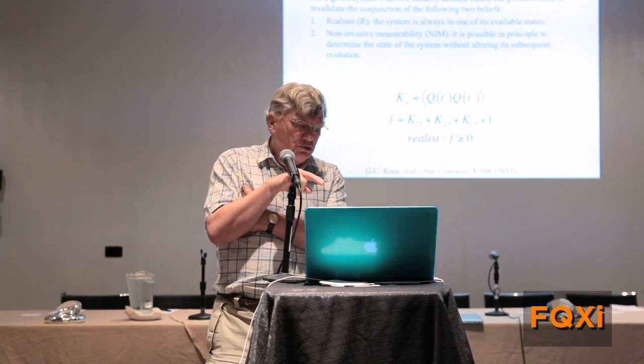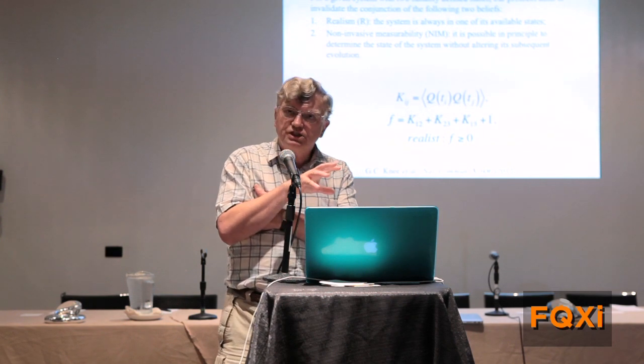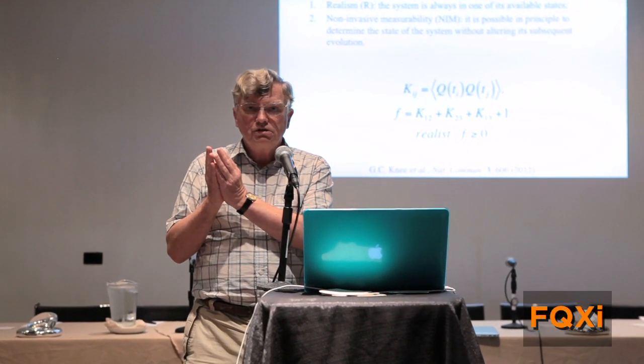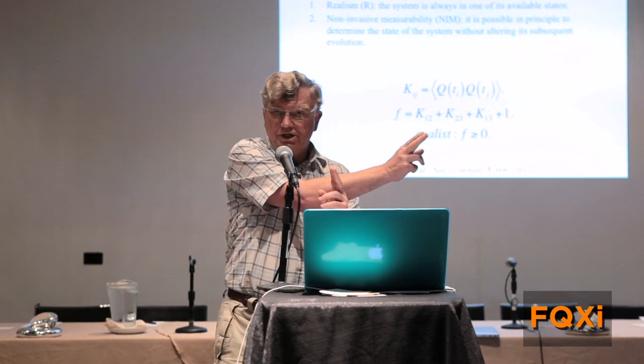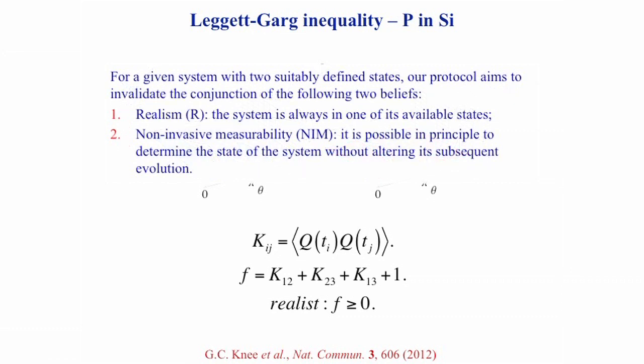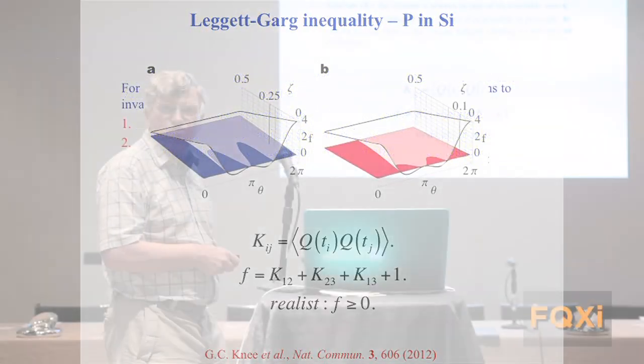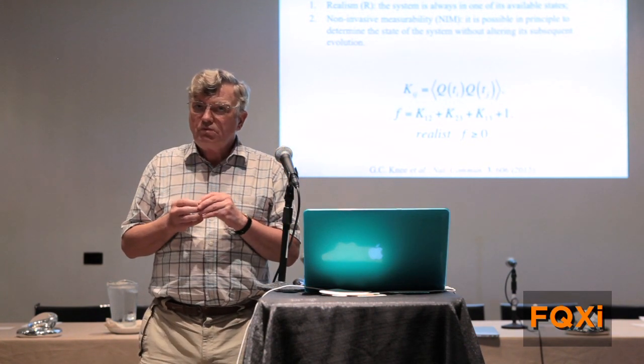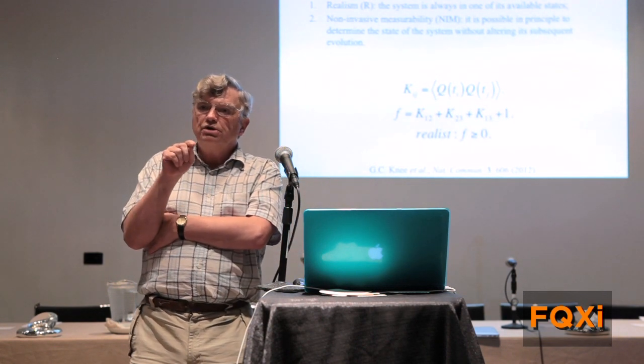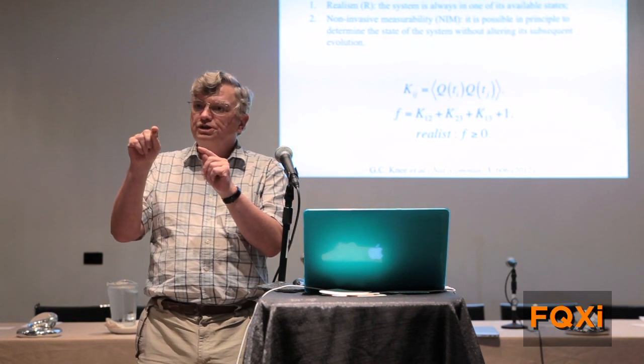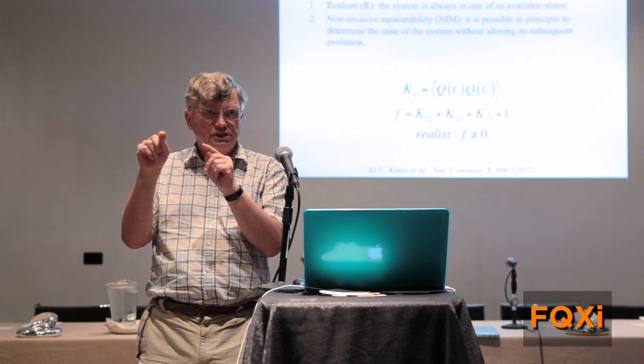There have been a series of experiments, and the one I'm going to show you, Tony Leggett has been kind enough to say is the only one that he regards as satisfactory. What the inequality consists of is taking the state of a system at three points in time, time one, time two, and time three, and then looking at the correlations and summing them in the way that's indicated on that slide. The macro-realist view can only give a non-negative value of the Leggett-Garg function. In the experiment I'm going to show you, the experimental system was the nuclear spin of a phosphorus impurity atom in silicon, and the measurement was made using an ancilla, which was the electron spin associated with that phosphorus impurity atom.